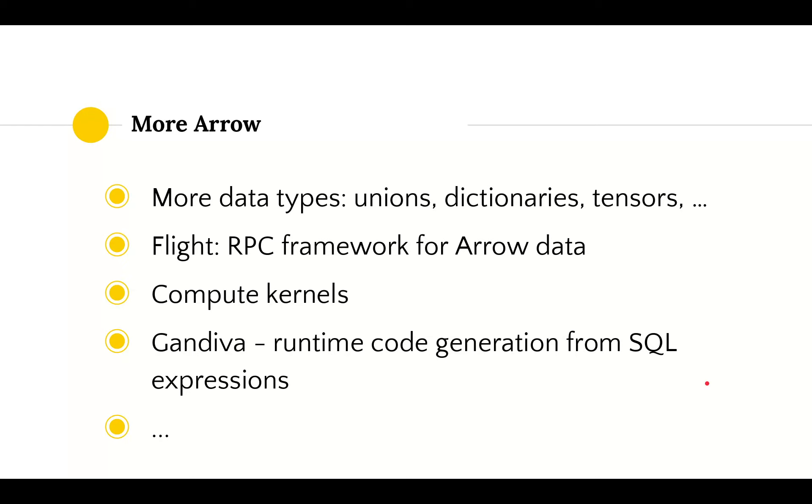Like we said before, there's a lot more to Arrow than we can show in this presentation. There are many other data types supported such as unions, dictionaries, tensors, and others. There's also the Arrow Flight framework for remote procedure calls for Arrow data, and there are already quite some computational kernels that operate on Arrow data structures. There's also a framework that helps doing SQL-like queries on Arrow data, such as Gandiva that does runtime code generation and compilation for SQL expressions. There's a lot of other exciting things going on in the Arrow project, so be sure to check out the website and mailing list to get the latest information.